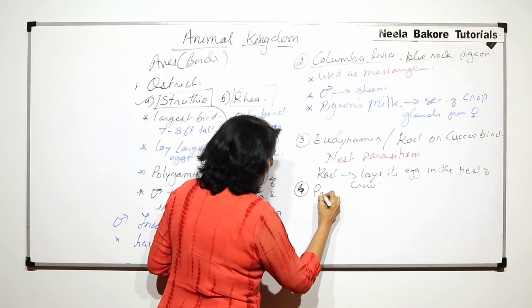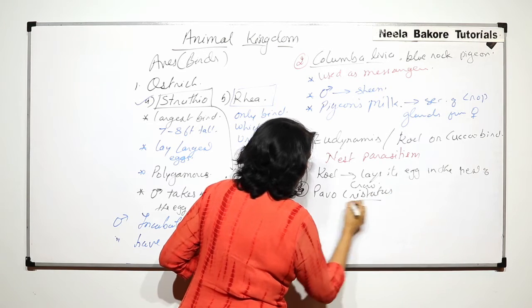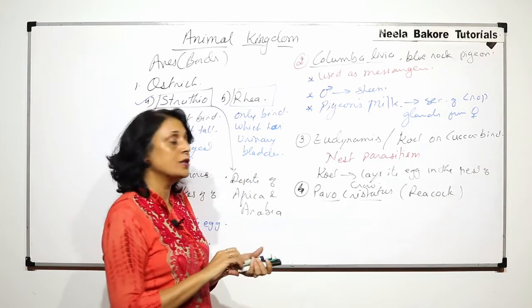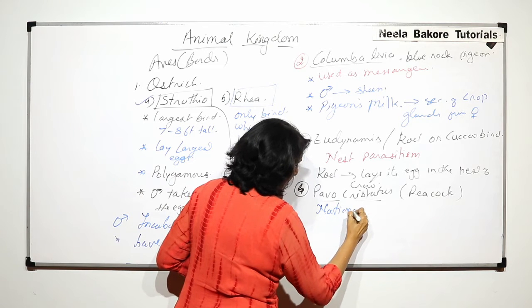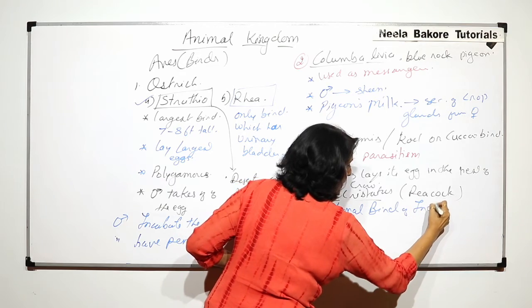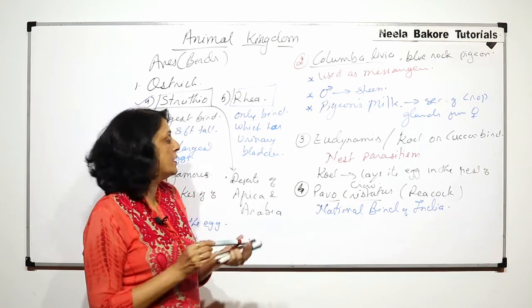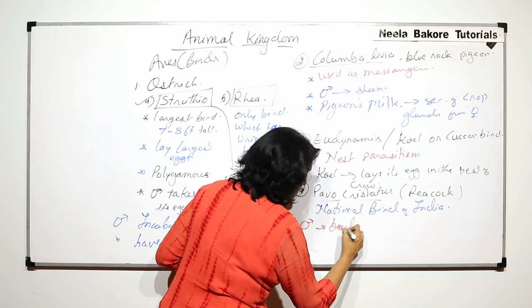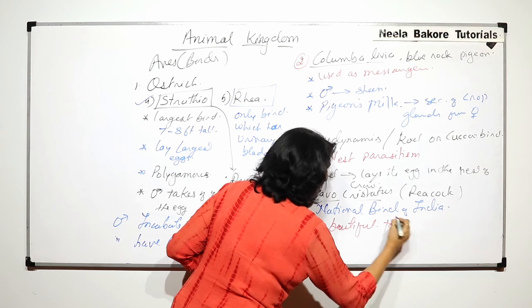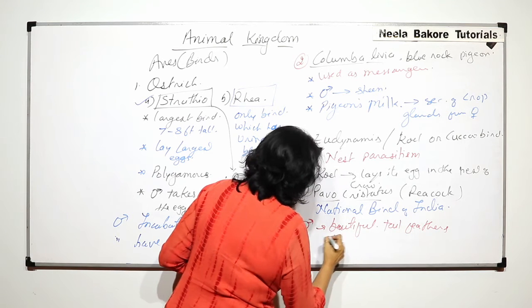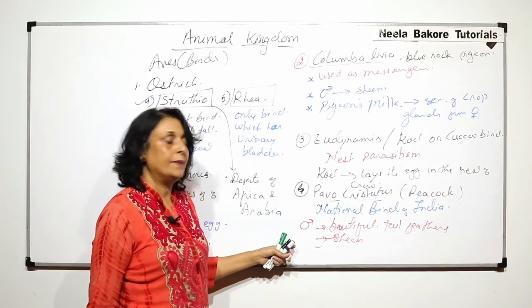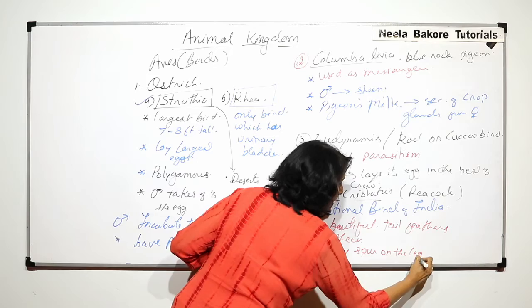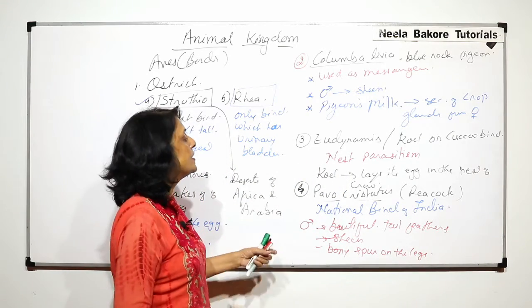Next example is Pavo cristatus, peacock. Peacock is the national bird of India. And as I said, the males are more attractive. So here also, the male bird has beautiful tail feathers as well as sheen. There is a shine on the body. And the males also have a bony spur on the legs. This is normally used for fighting or as a defense mechanism.